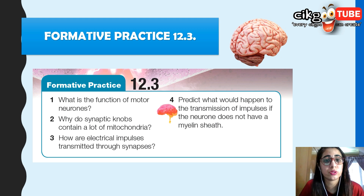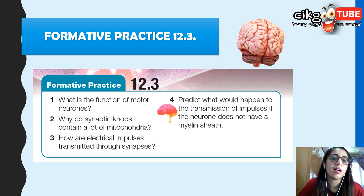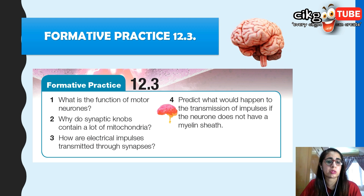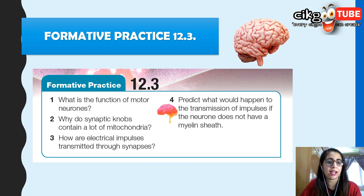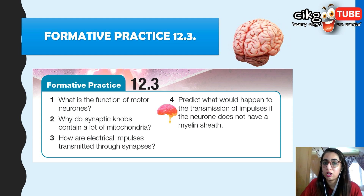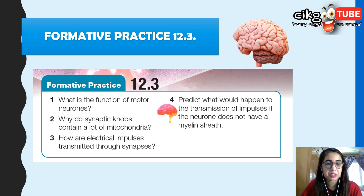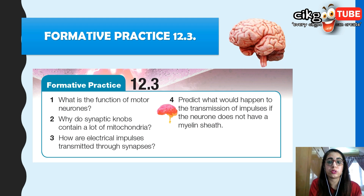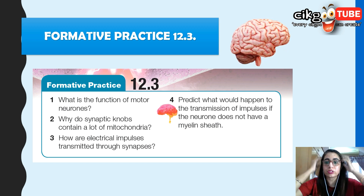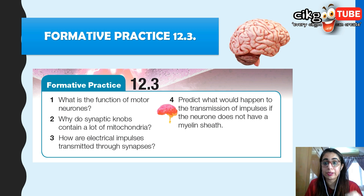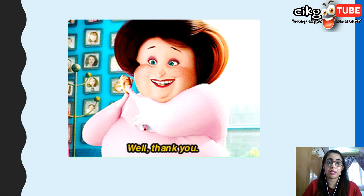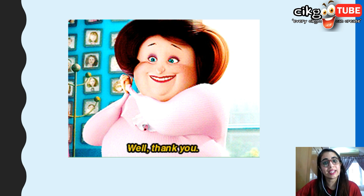We are done. Please do Formative Practice 12.3. The questions include: what is the function of motor neurons; why do synaptic knobs contain a lot of mitochondria; how are electrical impulses transmitted through synapses; and predict what will happen to impulse transmission if the neuron does not have a myelin sheath. Answers will be provided in the description box below — but only check after you have attempted the questions. Thank you for watching, and please like and subscribe to my channel.